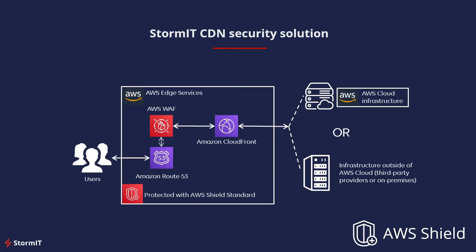Here is a Stormit CDN security solution with AWS Shield Standard and other services. This is a simplified reference architecture that we can provide to anyone already using AWS Cloud, starting with it, or to businesses with infrastructure outside of AWS Cloud. We provide special pricing for organizations transferring as little as 1TB of data per month. You can visit our website for more information.